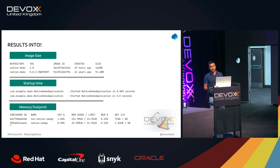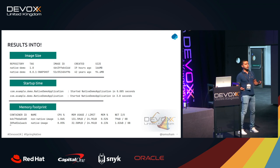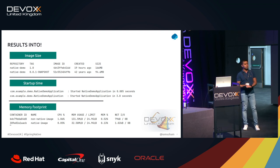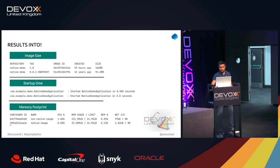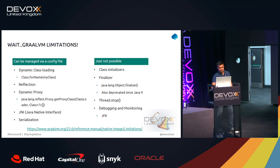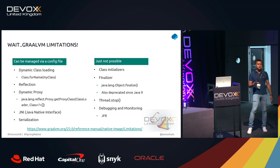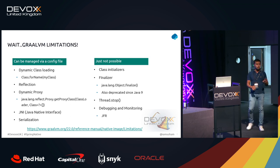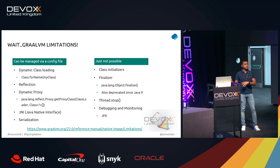Coming from an Oracle background where we were used to monoliths, I remember 4 GB of RAM or XMX value was more than enough for us. But wait — all of those benefits are very nice, but there are things you should be aware of. This is the part where you should understand what you are getting into.